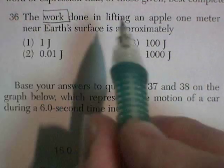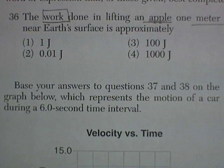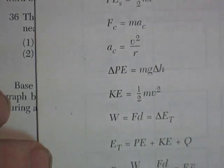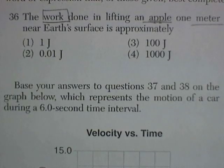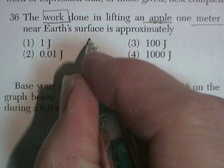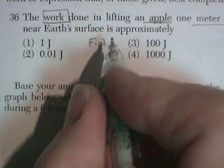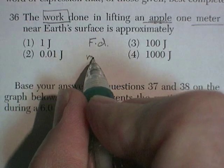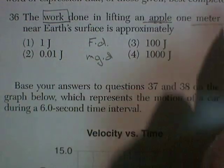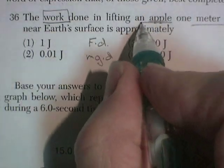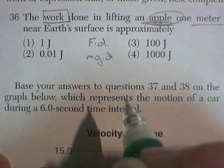Question 36: The work done in lifting an apple one meter near the Earth's surface is approximately... The formula for work is force times distance. The force we have to overcome is the weight, which is mg. So the real question is: what's the mass of an apple? This is essentially asking about the approximate mass of an apple.